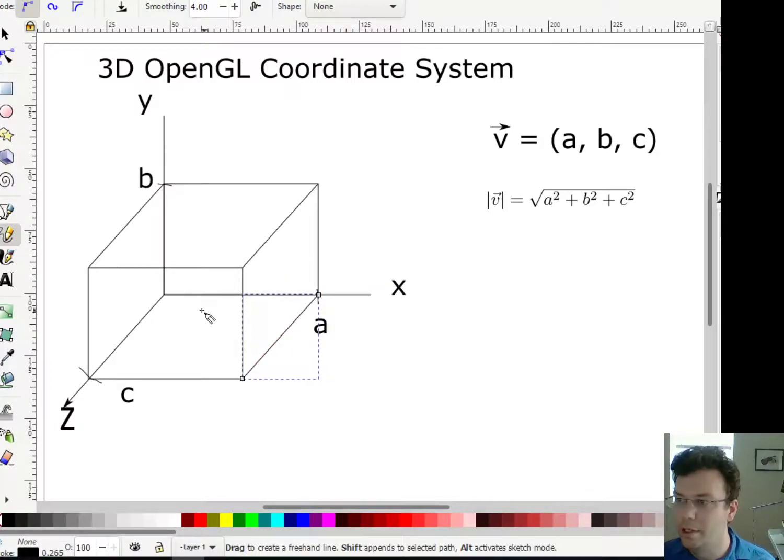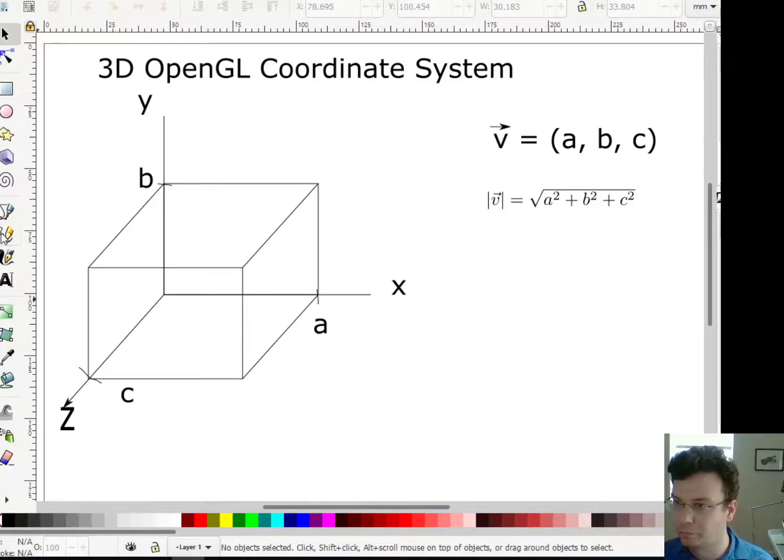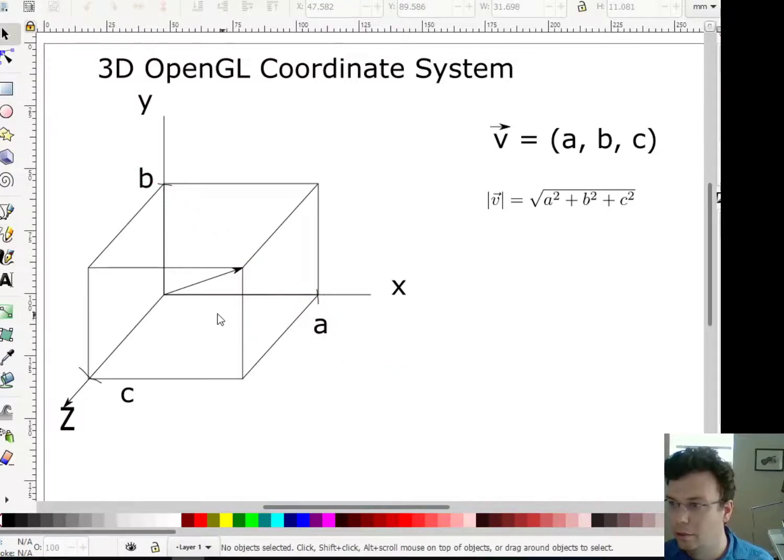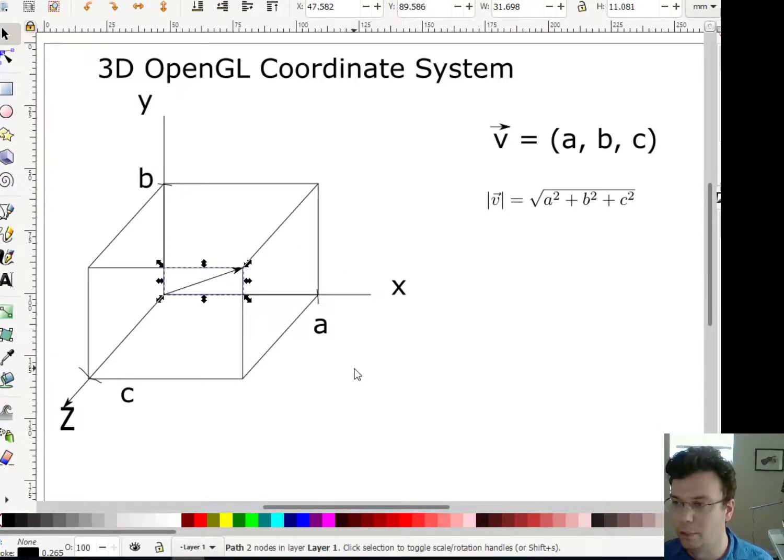And the corner, which is furthest from the origin, is going to be the tip of my vector. So here's the vector. This is the vector A, B, C. So A along X, B along Y, and then C along Z. So there we go.